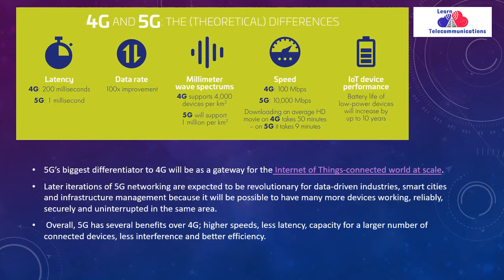Regarding the millimeter wave spectrum and device capacity: 4G supports 4,000 devices per square kilometer, whereas 5G supports 1 million devices per square kilometer. On theoretical speed, 4G brings 100 Mbps whereas 5G brings 10,000 Mbps.